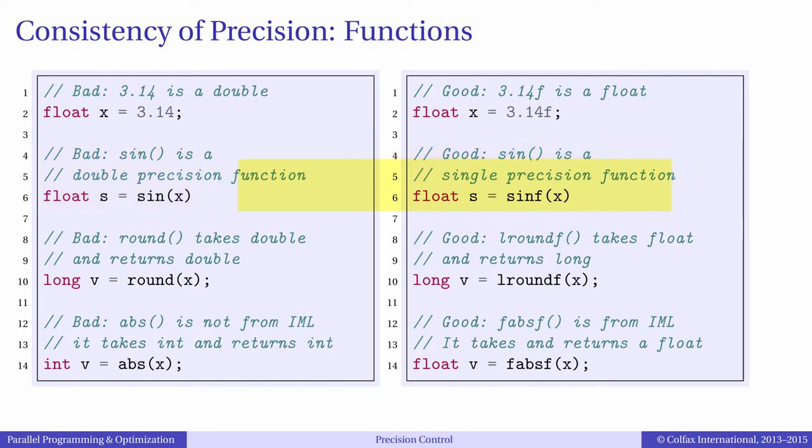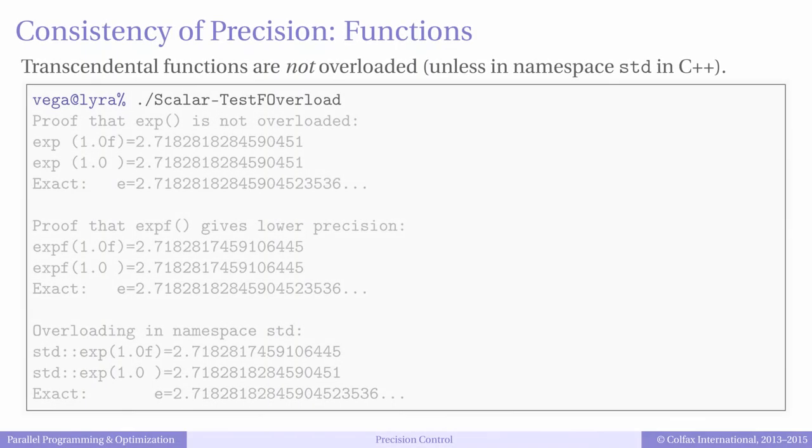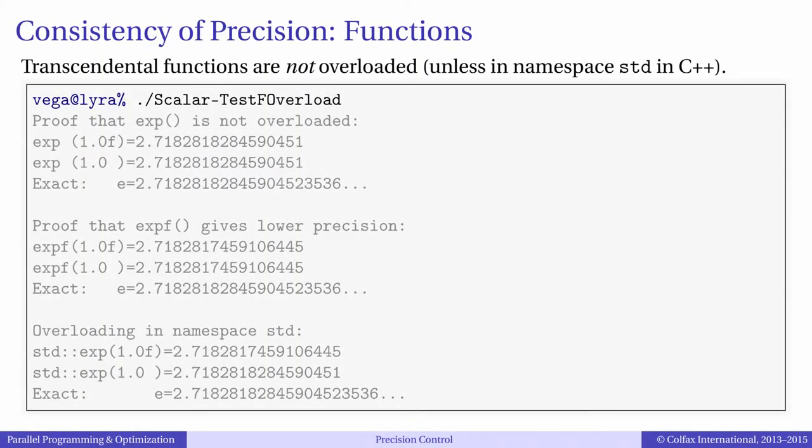For example, the sine function for single precision is spelled sinef. If by mistake we call sine, the calculation will be executed in double precision and the result will be downconverted to single precision with severe performance loss. The same applies to other functions from the math library. Using incorrect function names in single precision is a common mistake, especially in C++ where programmers expect function overload depending on their argument type.